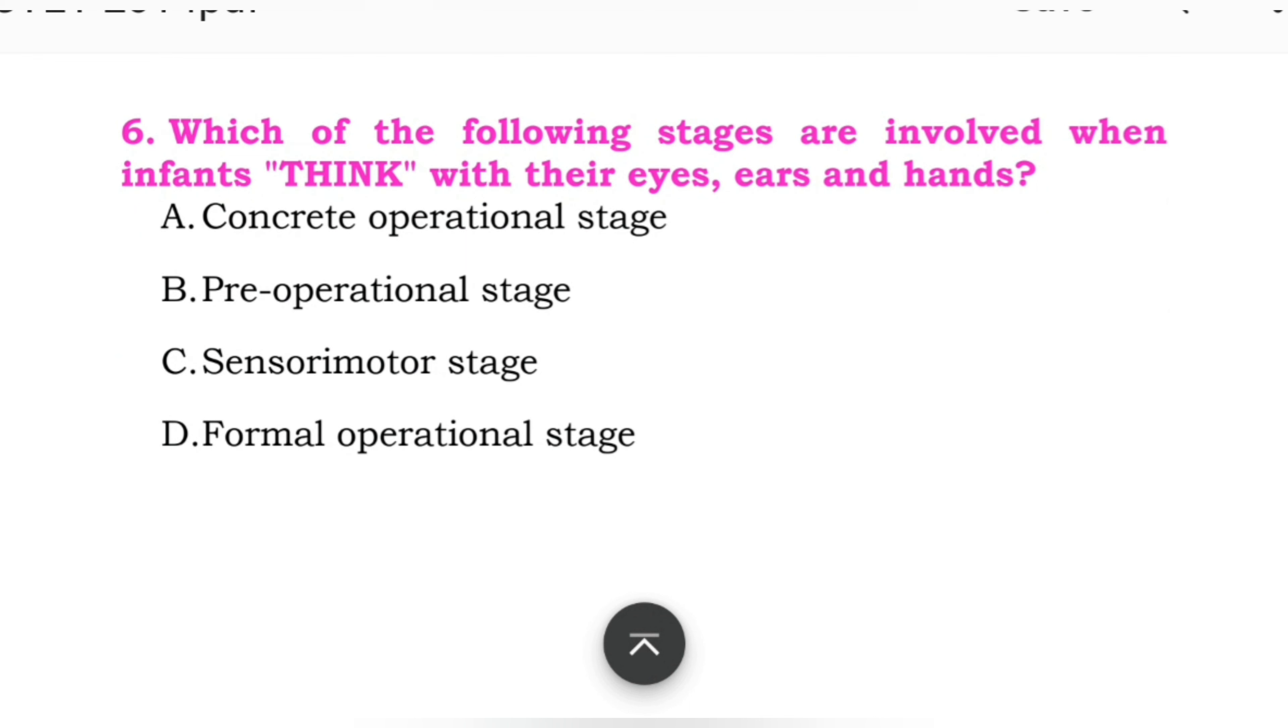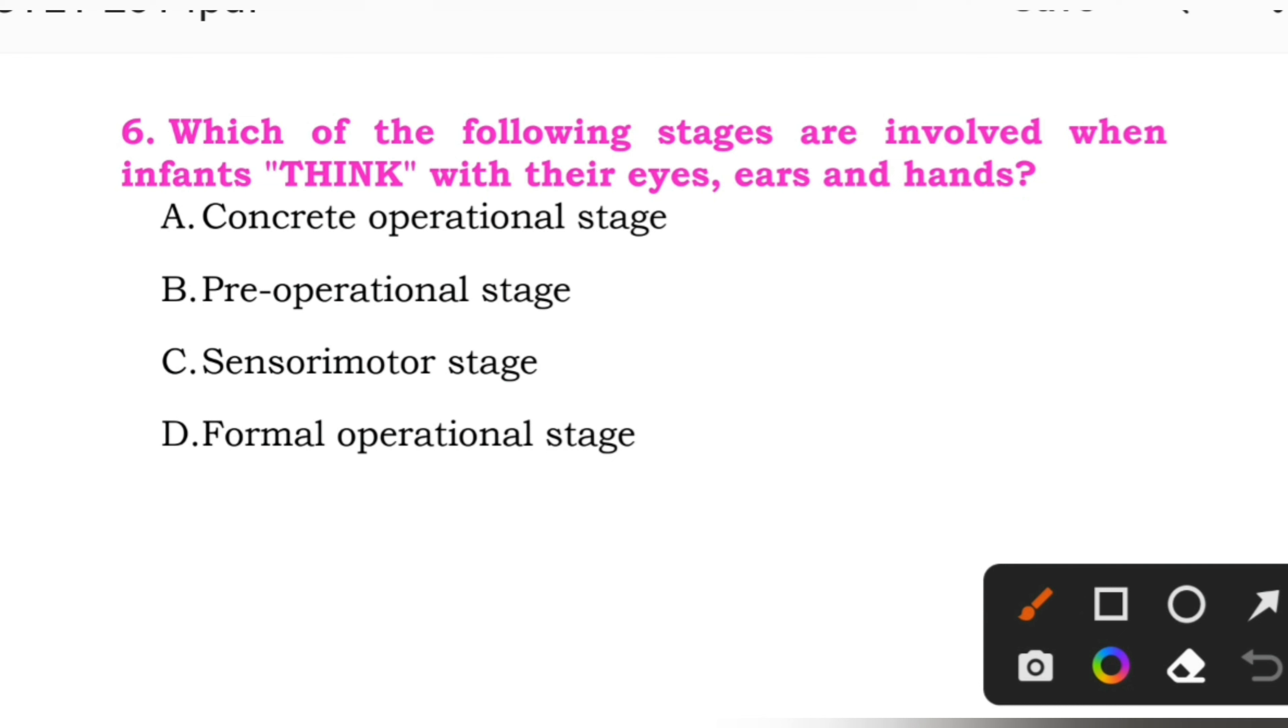Question number six: Which of the following stages are involved when infants think with their eyes, ears and hands? Options: A: concrete operational stage. B: pre-operational stage. C: sensory-motor stage. D: formal operational stage. Here, the right answer is C, sensory-motor stage.